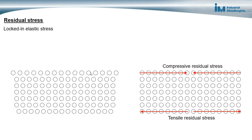The atoms in the bottom row want to contract horizontally. But in a metal, the atoms in both the top and bottom rows will be constrained by the rest of the metal, and the result of that constraining will be to put the top atoms in compressive residual stress.